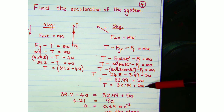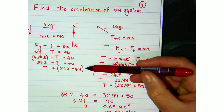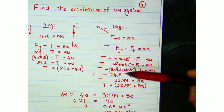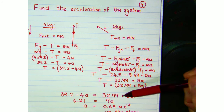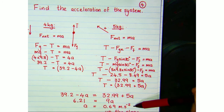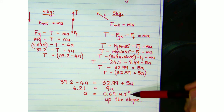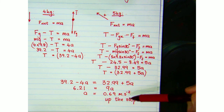We now have two expressions for the tension force. Since the tension is the same on each block, we equate them to eliminate T and solve for the acceleration. The acceleration of the system comes out to be 0.69 metres per second squared, directed up the slope.